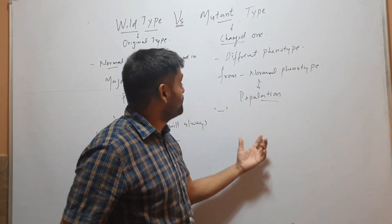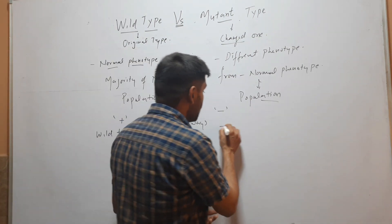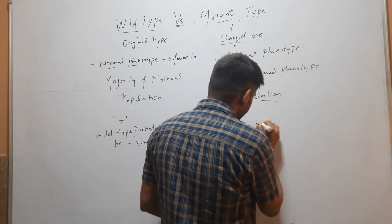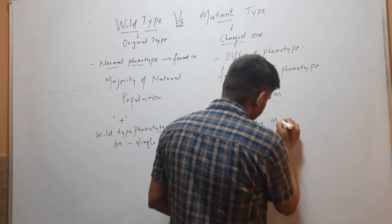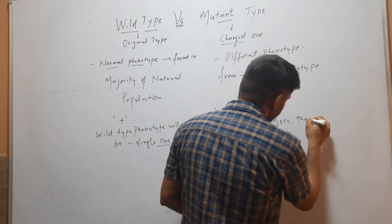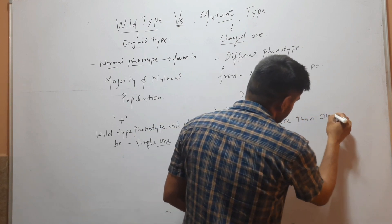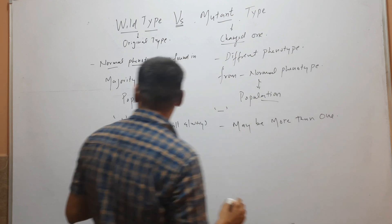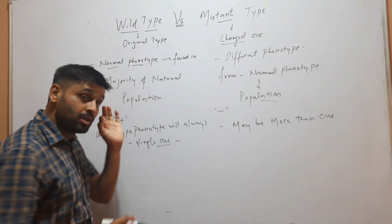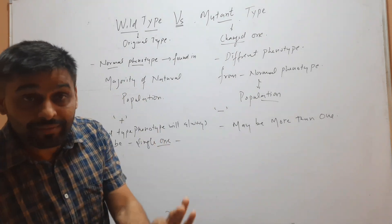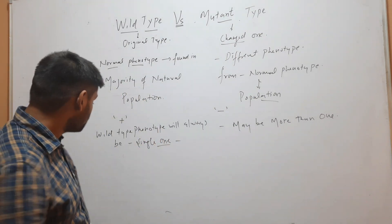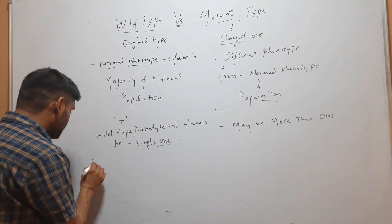This changed one, mutant type, may be more than one. But this wild type is only one in a population.